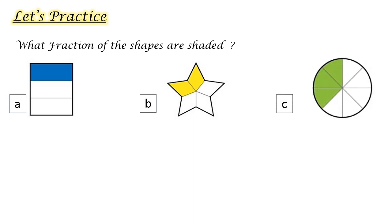Shape A. How many are shaded? Look at the color blue. Yes, one slash, and then the total number of the parts shaded and not shaded. Three. Very good.